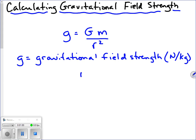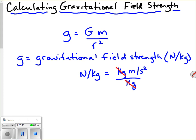To break down newtons per kilogram: a newton is one kilogram times meter per second squared, and divided by kilograms, the kilograms cancel. So the unit for gravitational field strength — newtons per kilogram — is equivalent to meters per second squared, which is our unit for acceleration. Another way to say gravitational field strength is the acceleration an object experiences due to the gravitational field of another object.